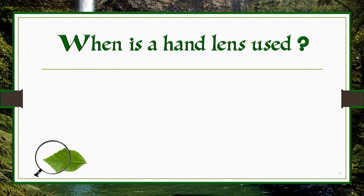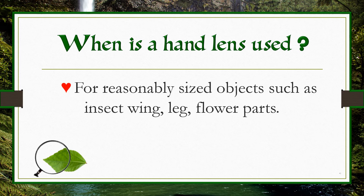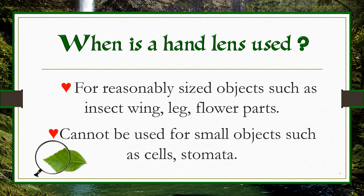When do we use a hand lens? A hand lens can be used for reasonably sized objects such as insect wings, legs, and flower pads. We cannot use it for smaller objects such as cells or stomata.